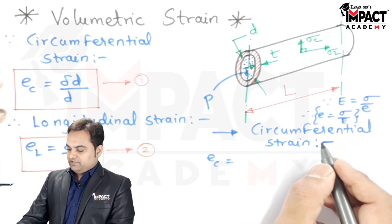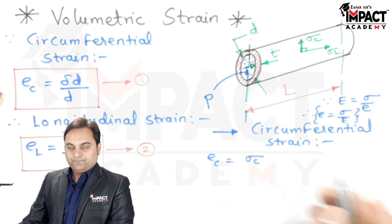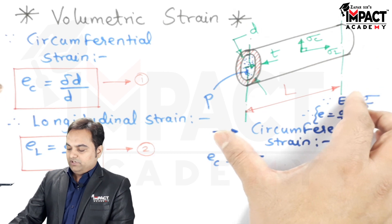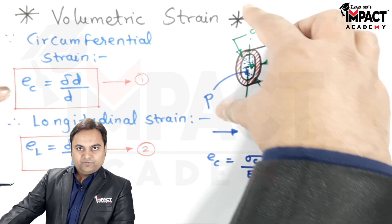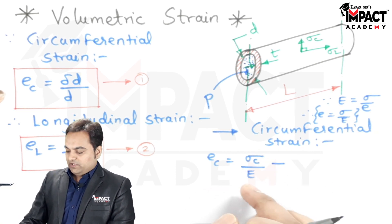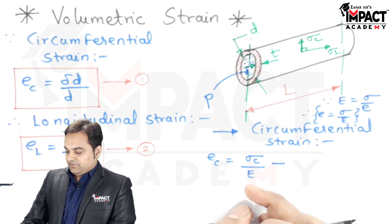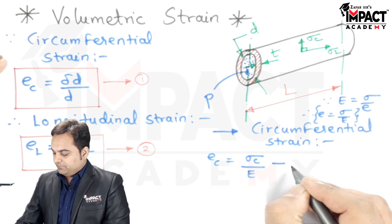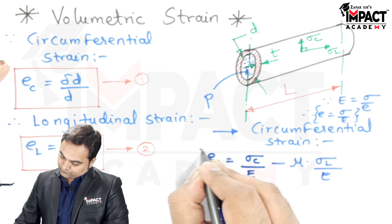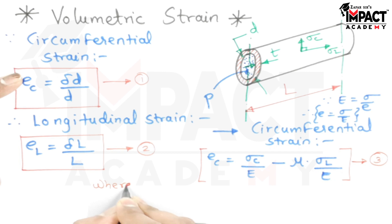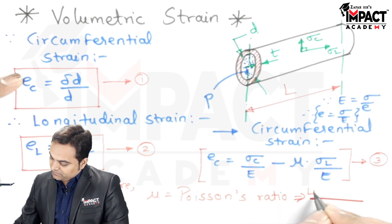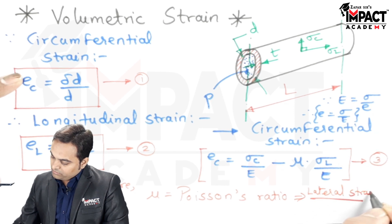When writing the circumferential strain for the complete cylinder, we have circumferential stress upon Young's modulus. The effect of circumferential strain on the length is that when the diameter increases, the length decreases, so we subtract the lateral strain, which is mu times the longitudinal stress divided by Young's modulus. This gives equation 3, where mu is the Poisson's ratio, defined as the ratio of lateral strain to linear strain. So when the diameter increases, the length decreases, giving the total circumferential strain for the cylinder.